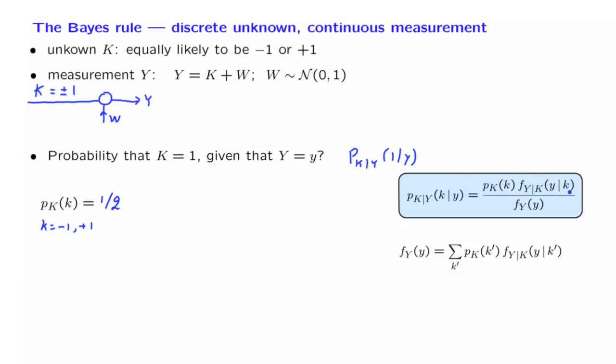Then, we need the conditional density of Y given K. So what does this assumption mean? It means that Y is a standard normal random variable, to which we add the value of K.